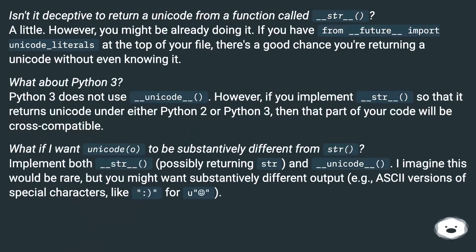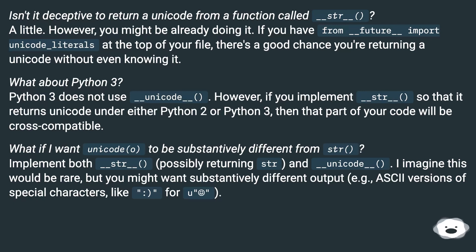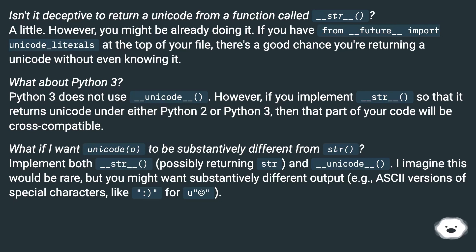Isn't it deceptive to return a Unicode from a function called __str__? A little. However, you might be already doing it — if you have 'from __future__ import unicode_literals' at the top of your file, there's a good chance you're returning a Unicode without even knowing it. What about Python 3? Python 3 does not use __unicode__. However, if you implement __str__ so that it returns Unicode under either Python 2 or Python 3, then that part of your code will be cross-compatible. What if I want unicode(obj) to be substantively different from str? Implement both __str__ (possibly returning str) and __unicode__. This would be rare, but you might want substantively different output — for example, ASCII versions of special characters like a colon smiley face.